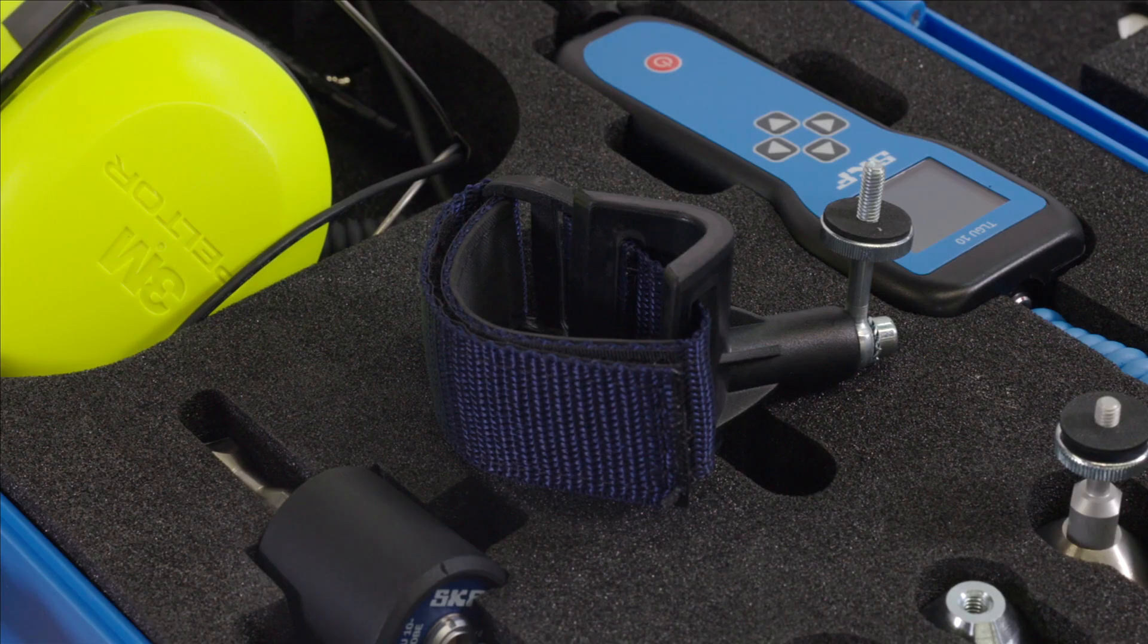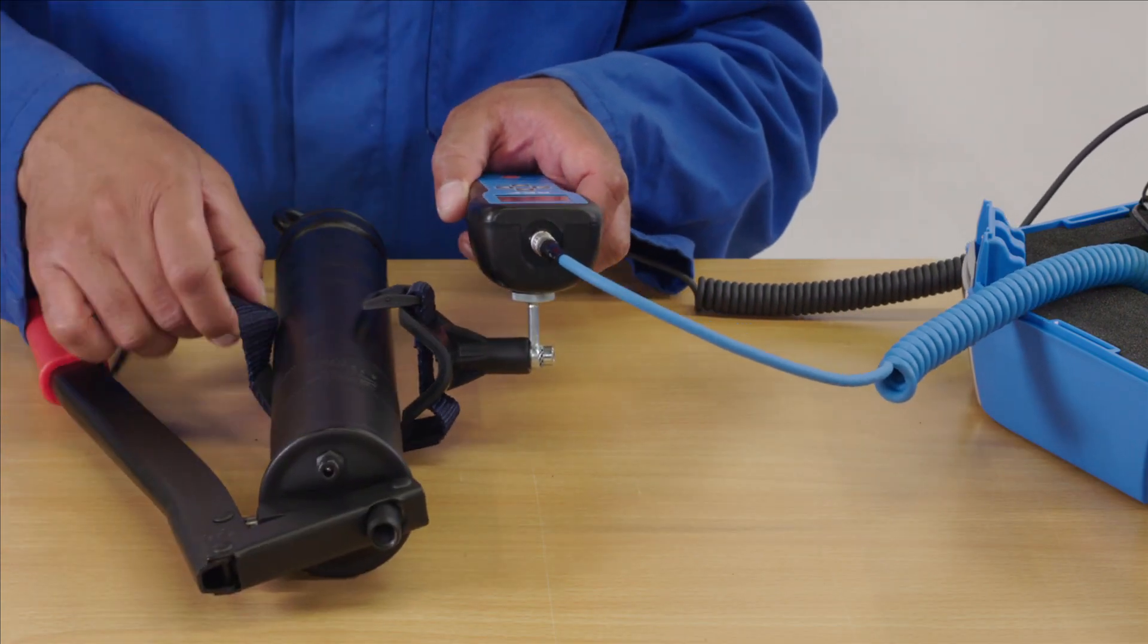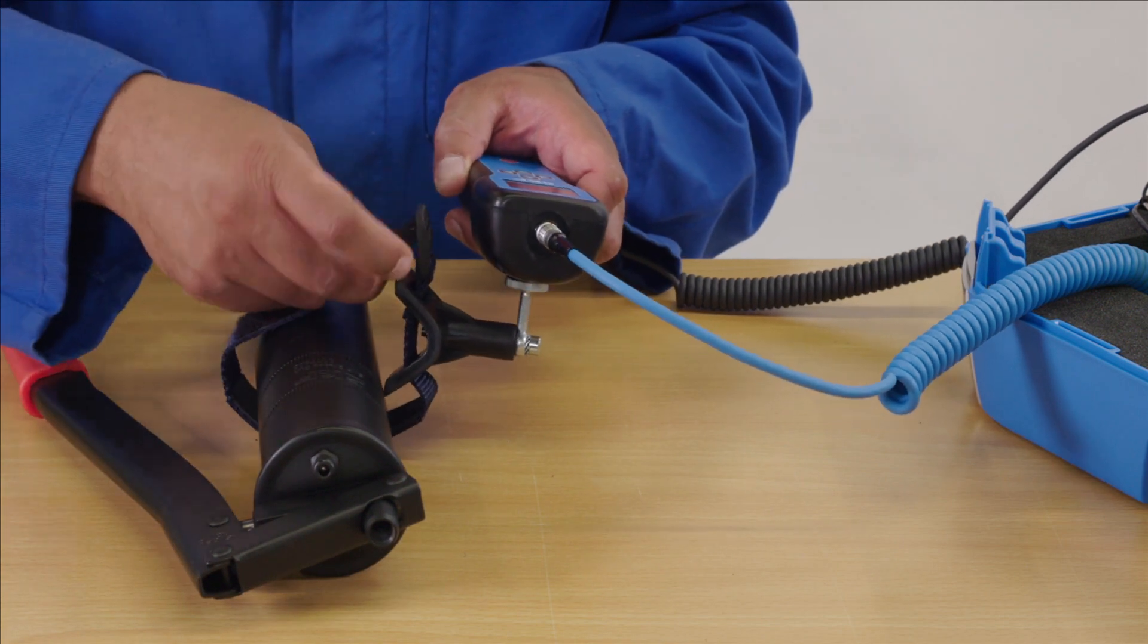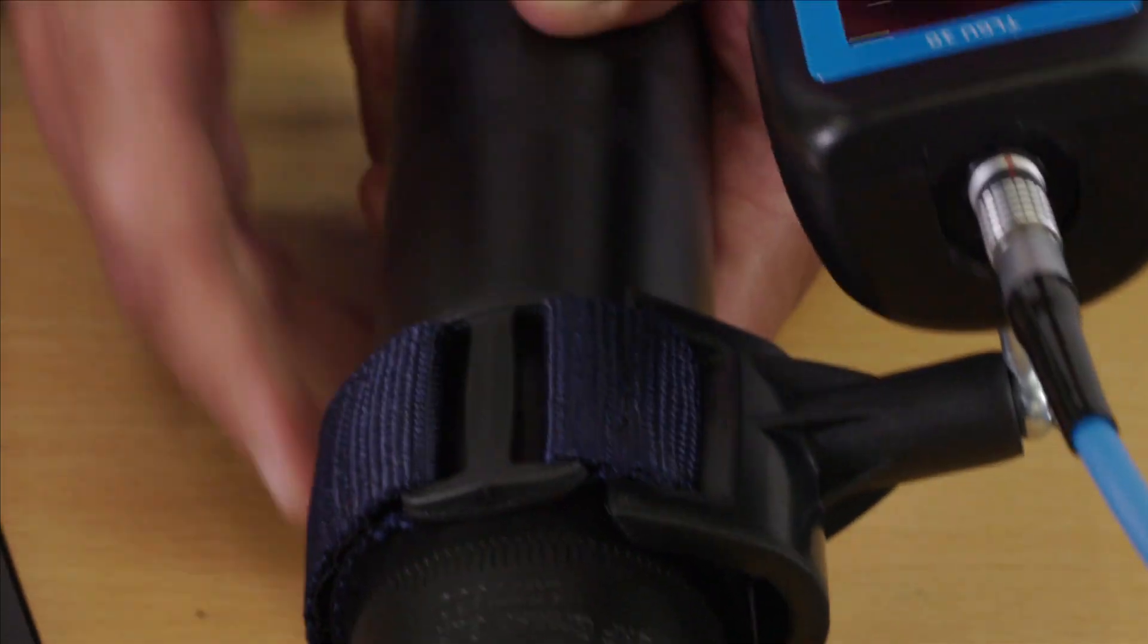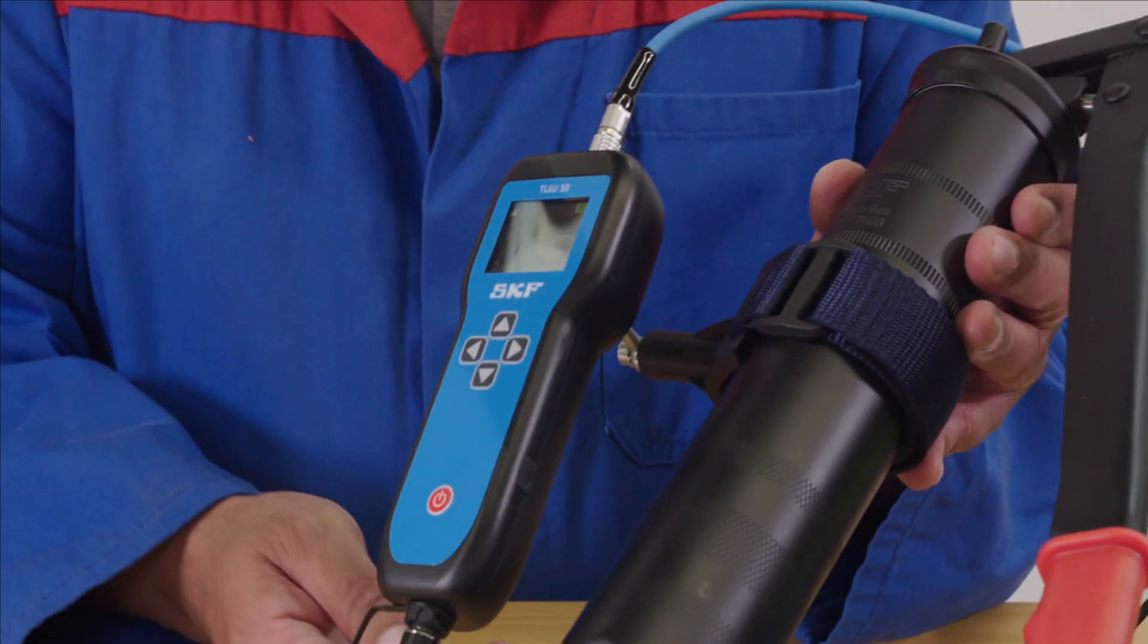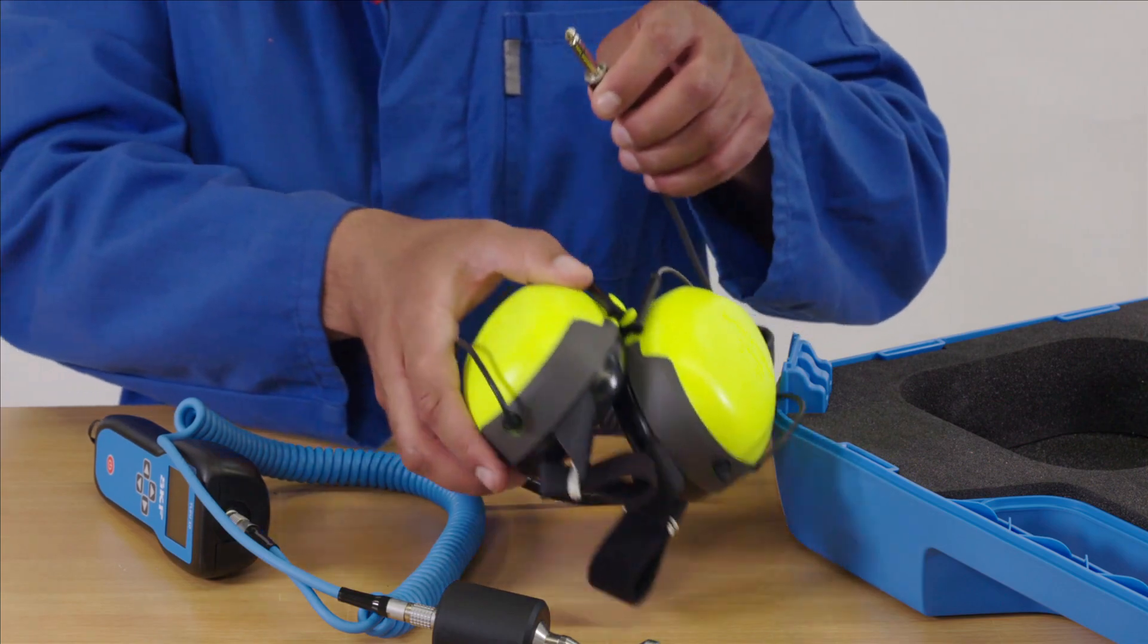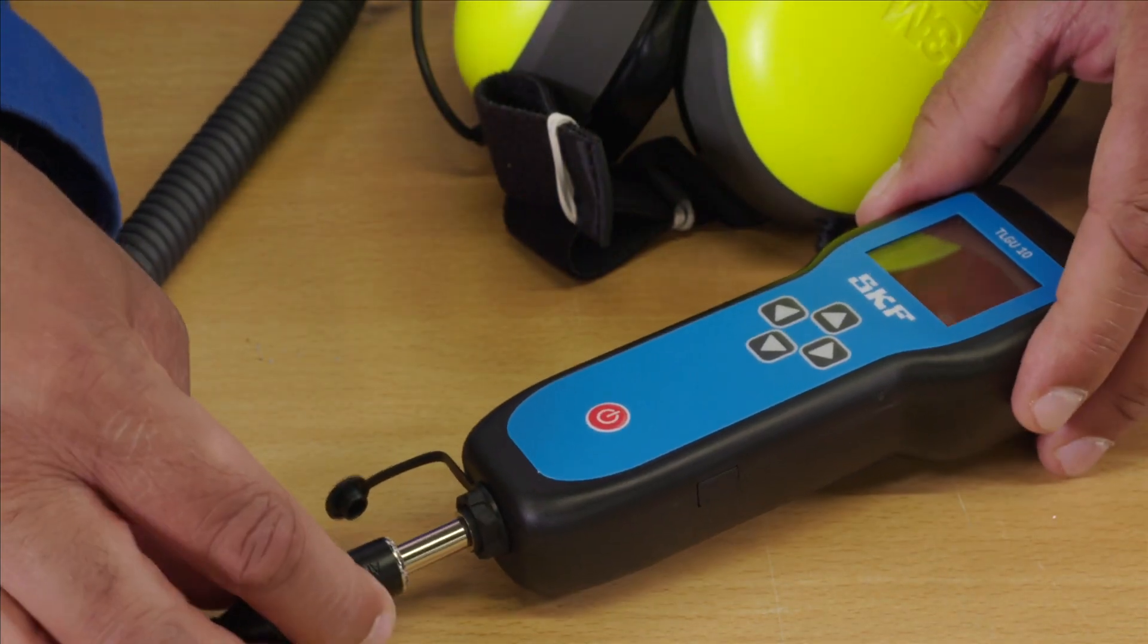For convenience, you can mount the TLG-U10 onto your grease gun either using the magnetic or Velcro cradles, each screw into the back of the device. Now connect the headphones via the socket at the bottom of the unit and you are ready to use the device.